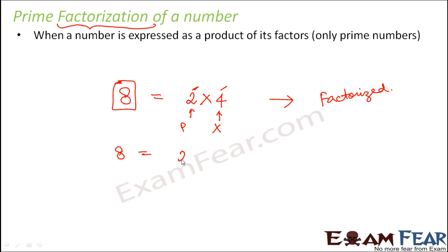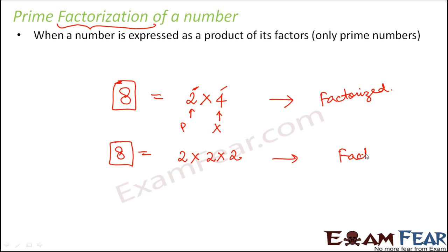So how will we do prime factorization of 8? If we write 8 as 2 into 2 into 2, we have written 8 as a product of its factors and here all the factors are prime numbers. So we can say that we have prime factorized 8 — this is called prime factorization of 8. When a number is expressed as a product of its factors such that all the factors are prime numbers, we call it the prime factorization of that number.